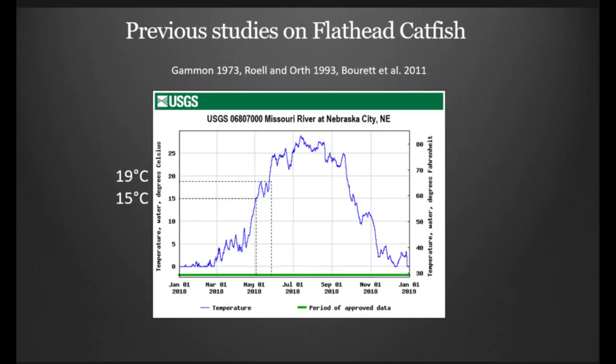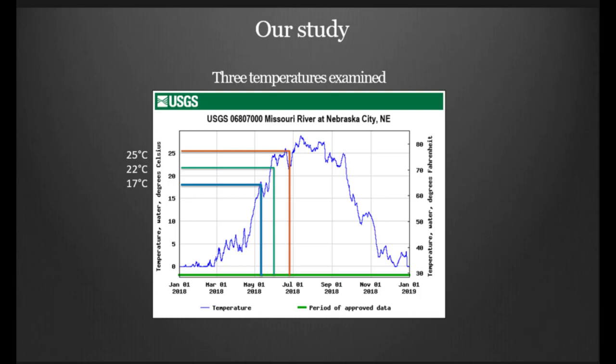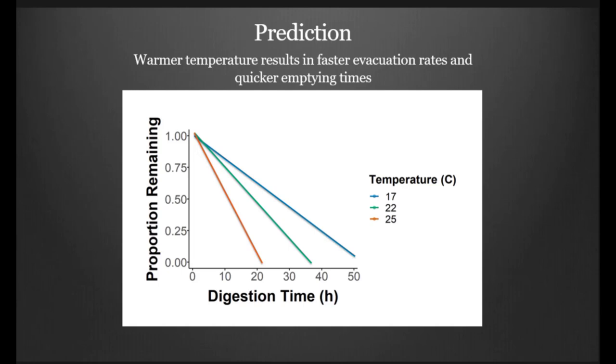We examined previous literature and found that Brett et al. 2008 actually suggested that consumption of flathead catfish was rare below 15 degrees Celsius. He also suggested that 19 degrees Celsius consumption was greater than at these warmer temperatures above 19 as compared to the lower temperatures of below 19 degrees Celsius. We chose three temperatures based on these previous studies, as well as some temperatures we'd normally see while out in the field sampling. This is just a temperature graph of the Missouri River and kind of lines up with what we might expect while we're out there. So we chose temperatures of 17, 22, and 25 degrees Celsius to examine. We predicted that warmer water temperatures would result in a faster evacuation rate and also quicker emptying times.